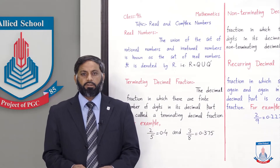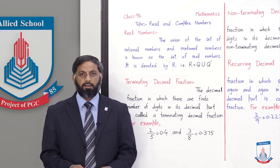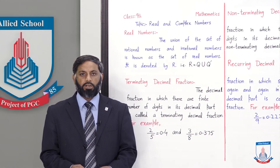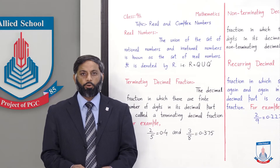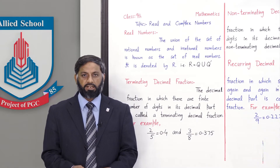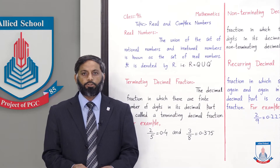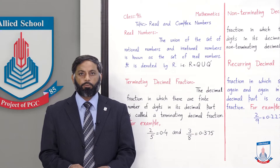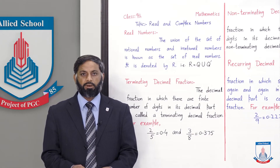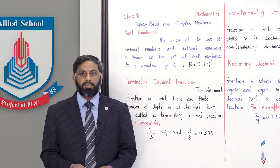Students, real numbers کو discuss کرنے سے پہلے ہم کچھ sets کو recall کرتے ہیں۔ Set of natural numbers: 1, 2, 3 and so on. Whole numbers: natural numbers میں 0 include کر لیا جائے تو whole numbers کا set بنتا ہے: 0, 1, 2, 3 and so on. Set of integers: 0, ±1, ±2, ±3 and so on — these are called integers.